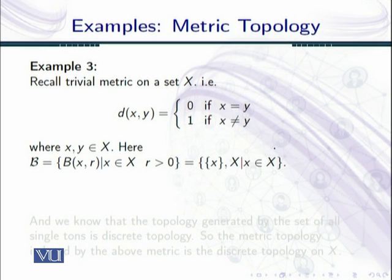Example 3: Recall the trivial metric on a set X defined as d(x,y) = 0 if x = y and d(x,y) = 1 if x ≠ y where x, y ∈ X. Here we have two types of open balls: the complete set X and singletons. So B consists of {x} where x ∈ X and the complete set X.